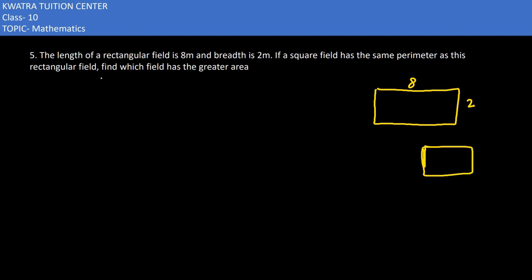We have a square field and it has the same perimeter as the rectangle. So what we can say is perimeter of square is equal to perimeter of rectangle. So here we have perimeter of square is 4 times side. Rectangle is 2 into L plus B.